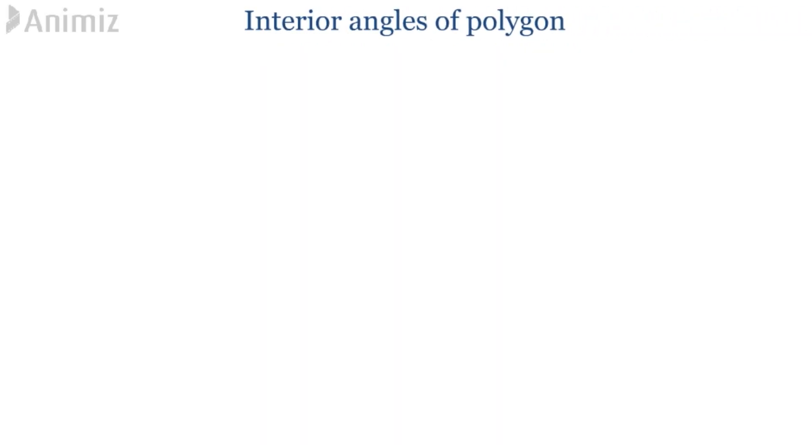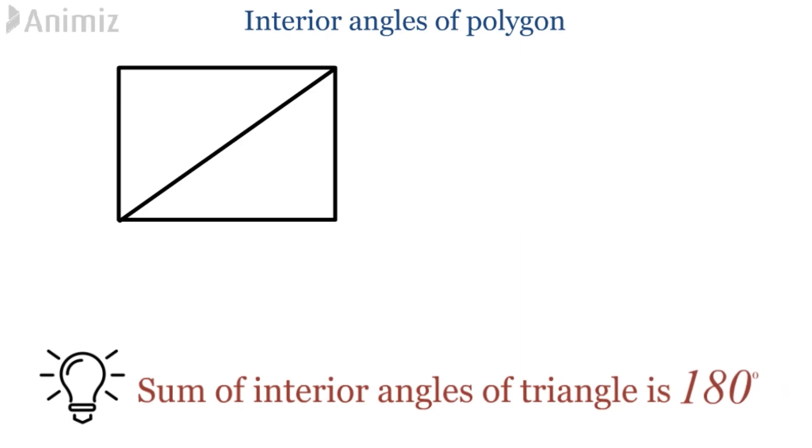First, we'll take a look at interior angles of a polygon. Here, we have a quadrilateral which can be divided into two triangles. Recall that the sum of interior angles of a triangle is 180 degree.